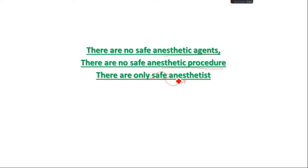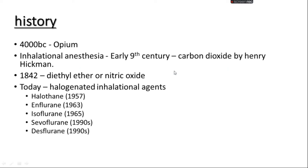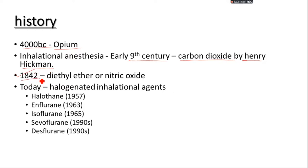So let's talk about the history. If we look at the history, opium was first used in 400 BC, and then as the world moved forward, in the 19th century Henry Hickman discovered that carbon dioxide also worked like providing anesthesia. Then in 1842, ethyl ether and nitrous oxide were discovered to provide no sensation to animals, and were used in providing anesthesia.